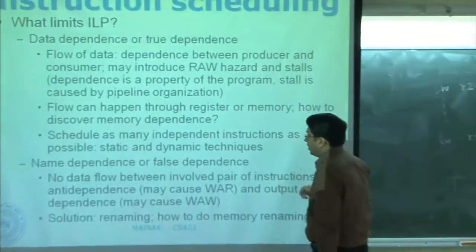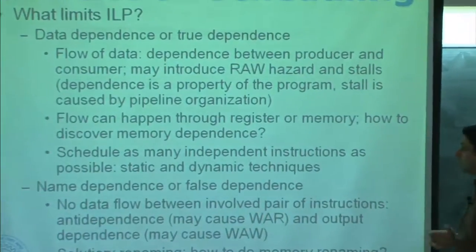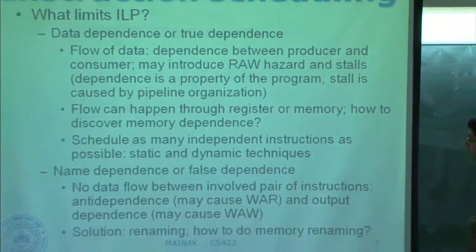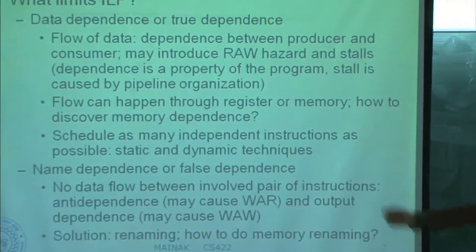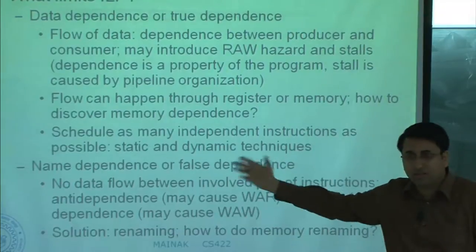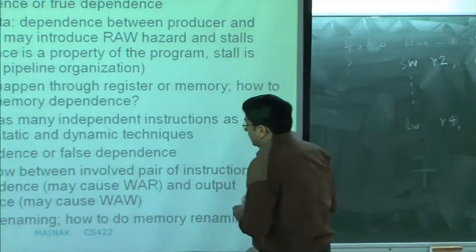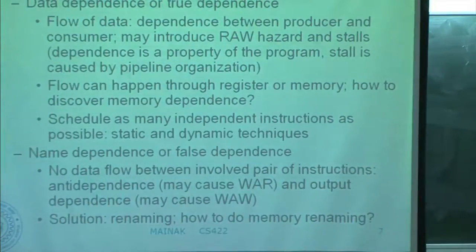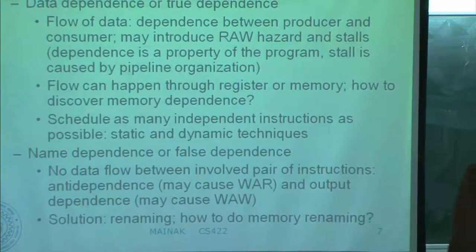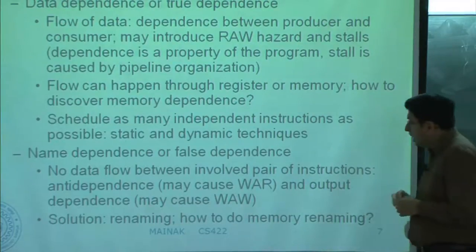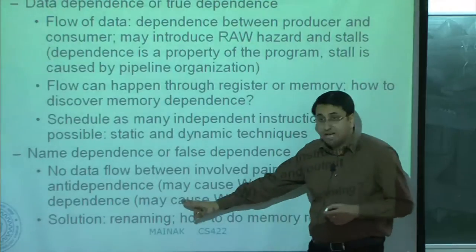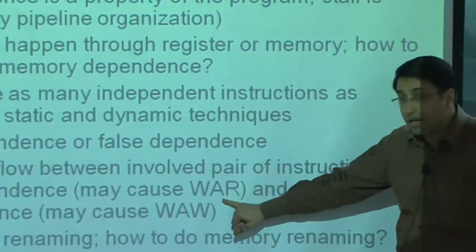How do you really go around true data dependence? You try to schedule as many independent instructions as possible, and we will see dynamic techniques to do that. The second type of limiter is name dependence — also called false dependence — because there is no data flow between the involved pair of instructions. There are two types: anti-dependence, which may cause write-after-read hazard, and is just the opposite of flow dependence.